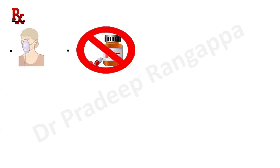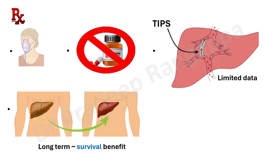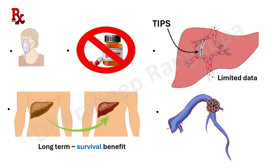Unfortunately, there is no definitive medical treatment for hepatopulmonary syndrome — only supplemental oxygen can be given. TIPS (transjugular intrahepatic portosystemic shunt), placing a shunt between the portal vein and hepatic vein, has been tried but has limited data and has not shown to be truly helpful. The most definitive therapeutic option is liver transplantation for long-term survival benefit. In patients with very large pulmonary arterial shunts, endovascular coiling to close the shunt has been attempted.